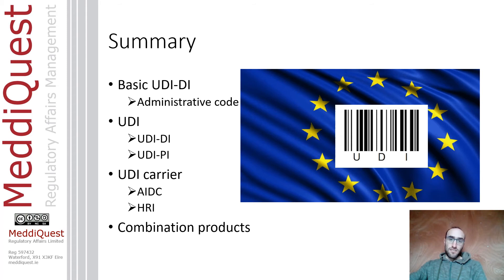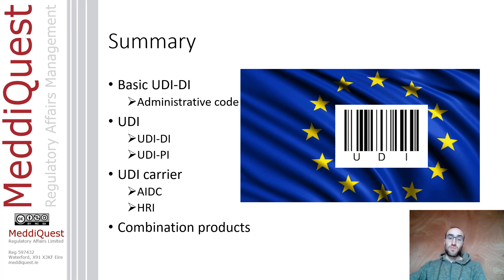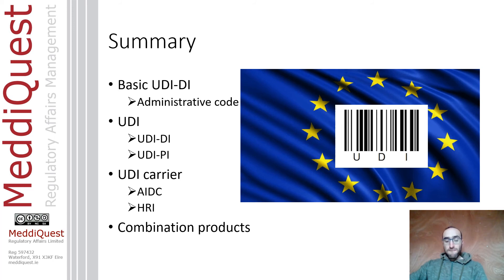To summarize: the Basic UDI-DI is an administrative code used to identify the manufacturer and group devices of the same category. The UDI is composed of the UDI-DI, a fixed part obtained by registering with an official entity, and the UDI-PI, the dynamic part related to production. The UDI carrier has two parts: AIDC for automatic scanning and HRI for human readability. For combination products regulated as a medical device, UDI is required; if regulated as a medicinal product incorporating a medical device, UDI is not mandatory.